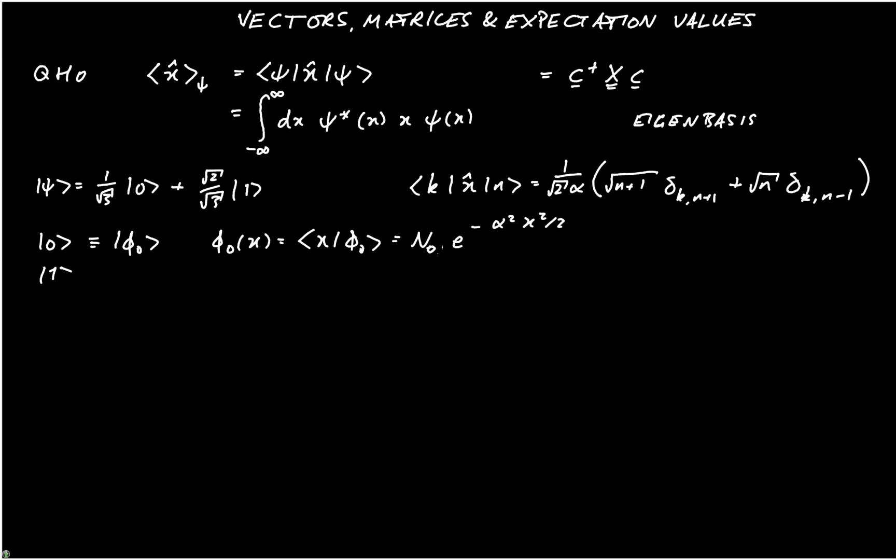And ket 1 is equivalent to phi 1, where phi 1 of x is bra x ket phi 1, and that's n1 times 2x, which is the Hermite polynomial, times e to the minus alpha squared x squared over 2. And ket 0 is the first basis vector, and ket 1 is the second basis vector.